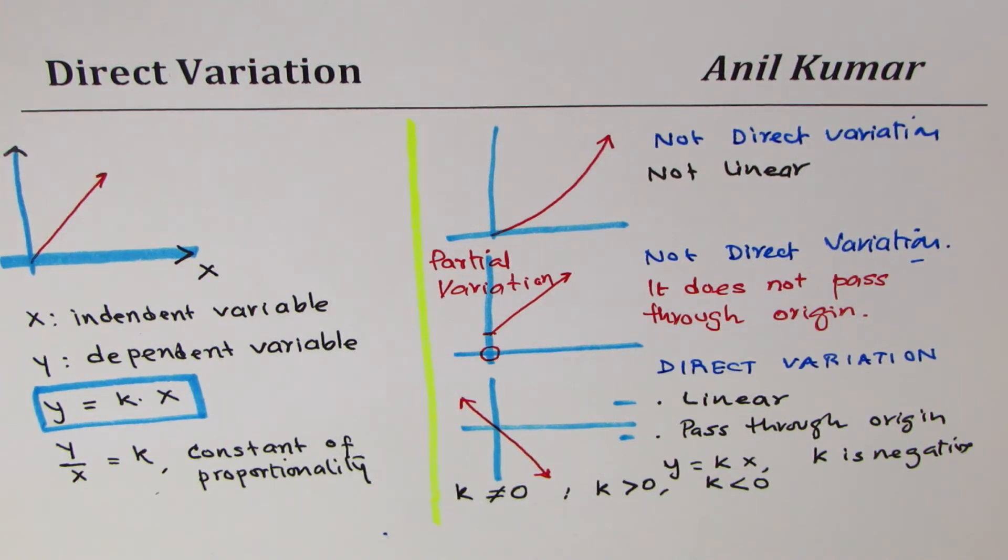I hope that makes it very clear how to identify from equation and from the graph whether a function or whether a relation is a direct relation or not.